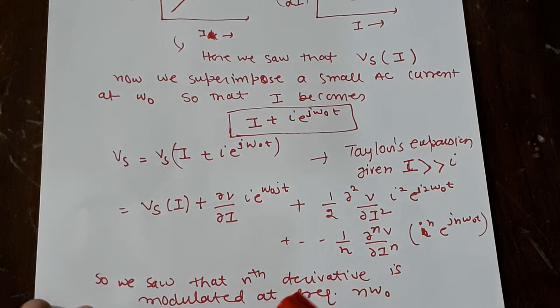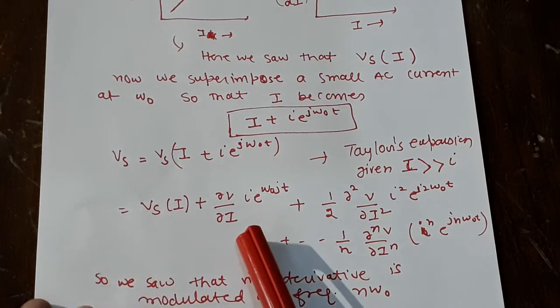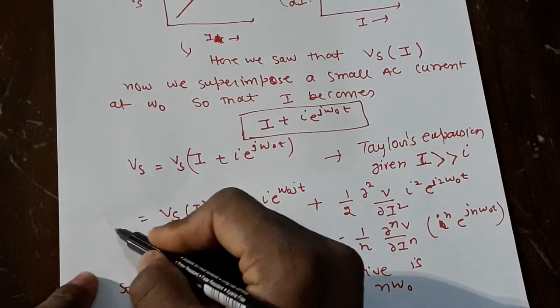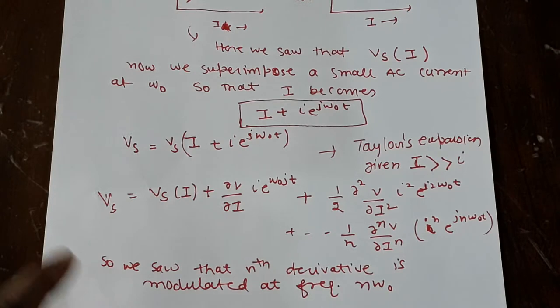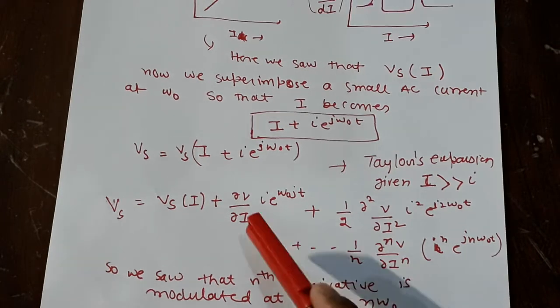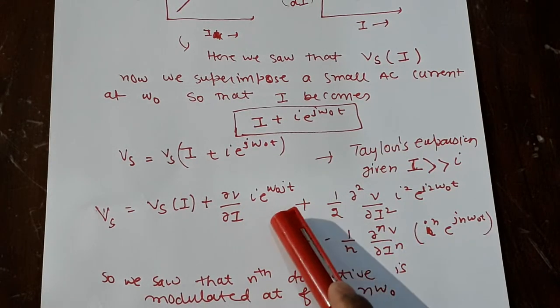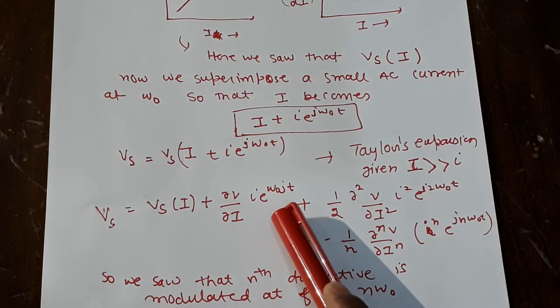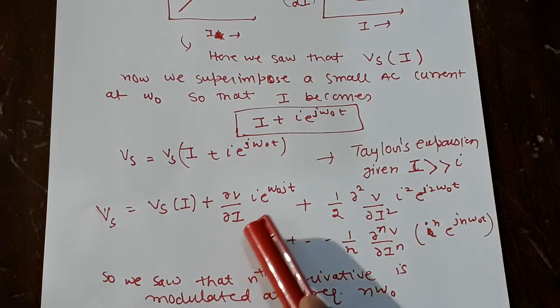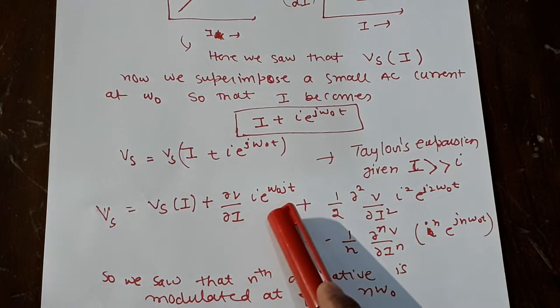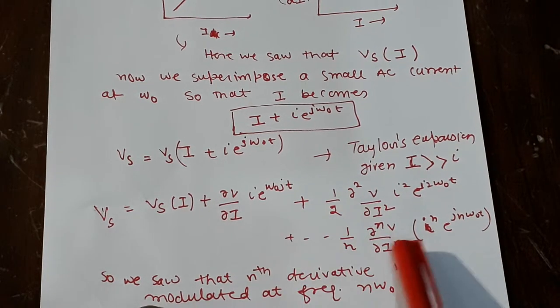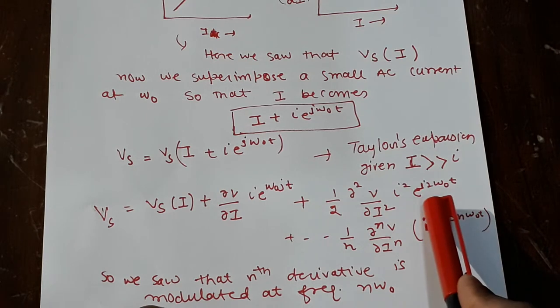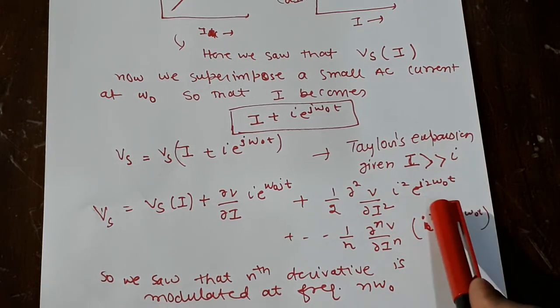So if you look very carefully, what we are doing here is if you see the first derivative. So if you want to see the first derivative, you need to measure at first ω, very easy. If you measure in lock-in amplifier, you will get the first derivative at ω₀.